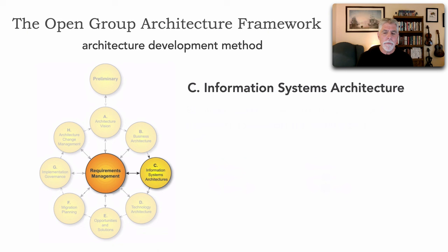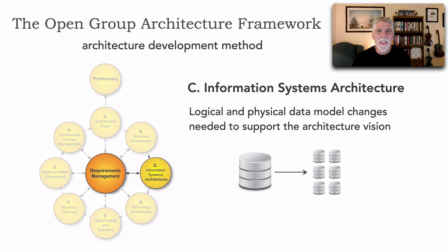The next phase is Phase C, the Information Systems. This is all about the data — the logical and physical data models that need to change in order to support our architecture. A good example is the move from a legacy system during app modernization over to microservices, which would require us to break apart a monolithic database into separate databases, one for each service. That would all be described in Phase C.